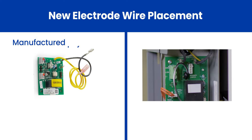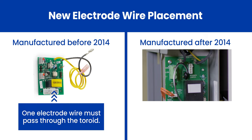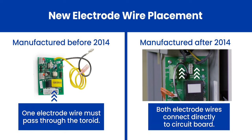For models manufactured prior to November 2014, one of the two new electrode wires will be installed through a large metal ring called the toroid. For models manufactured after November 2014, both wires will plug directly into the printed circuit board.